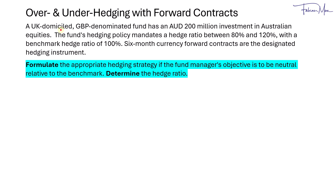In this series of examples, we will look at cases of over-hedging and under-hedging with forward contracts. In my example, I have a UK domiciled British pound-denominated fund, which has a 200 million Australian dollar investment in Australian equities. The fund's hedging policy mandates a hedge ratio between 80% and 120%, with a benchmarked hedge ratio of 100%.